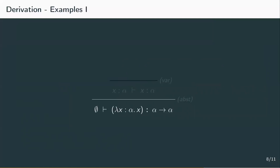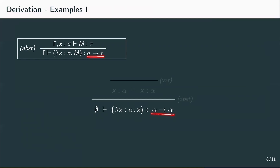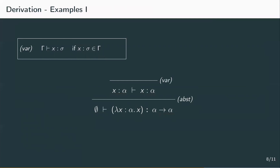Example one is the identity function. We guessed that from an empty context, lambda x of type alpha dot x has the type alpha to alpha. The term consists of an abstraction, so we apply the abstraction rule. The types sigma and tau from the rule are both alpha in our case. So we take gamma — which was empty — and add the declaration x of type alpha, which yields the term m, which was just x of type alpha. We then derive the judgement that x of type alpha yields x of type alpha. Since all that's left is a declaration on the right side, we apply the variable rule and reach our axiom, finishing the derivation. Lambda x of type alpha dot x is indeed a legal term.